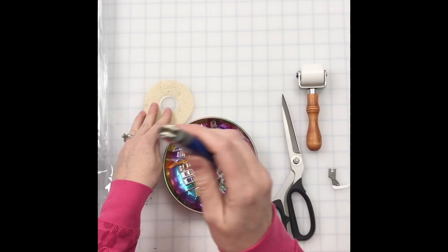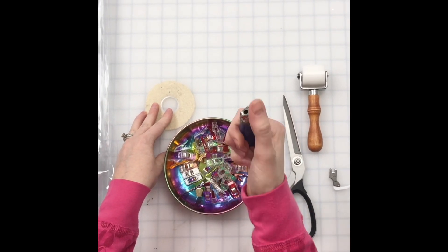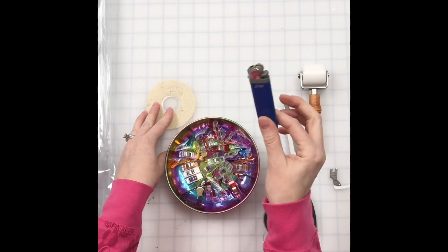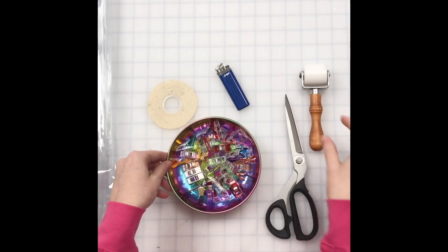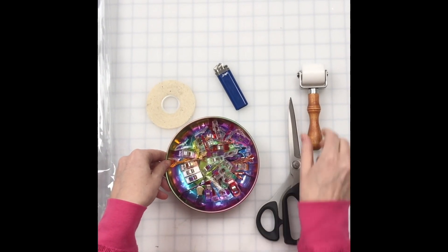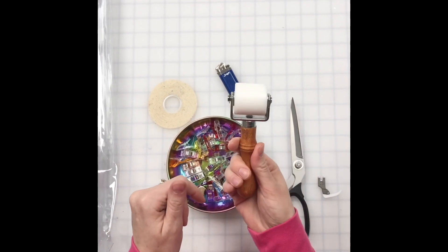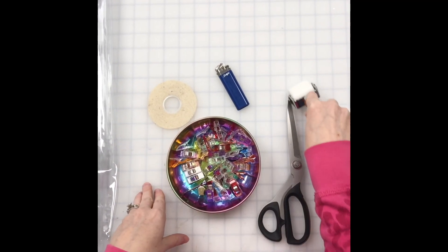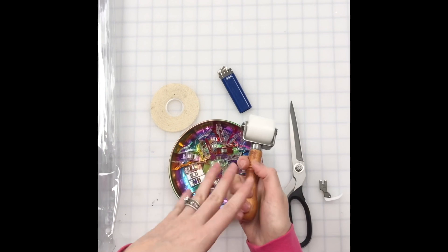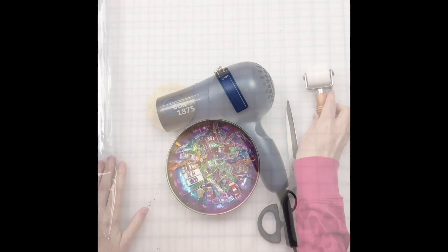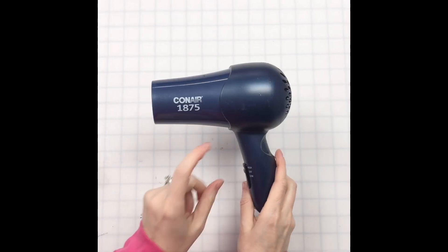Make sure after each starting and stopping you're singeing the threads to keep them from unraveling. Some sharp scissors, and then this is a poly roller I got from Candy Leather—this also helps really smooth those seams because you can't iron them flat.